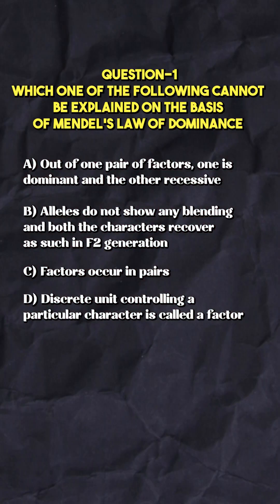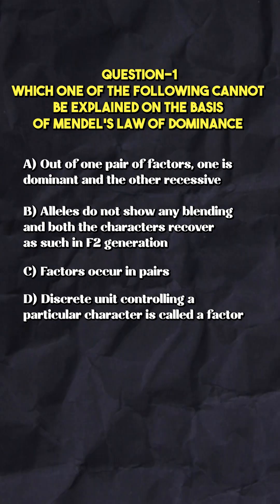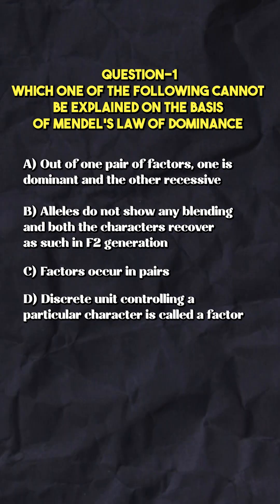Which one of the following cannot be explained on the basis of Mendel's Law of Dominance? Mendel's Law of Dominance states that characters are expressed as discrete units called factors. Factors are always present in pairs — for example, capital T capital T, capital T small t, or small t small t.